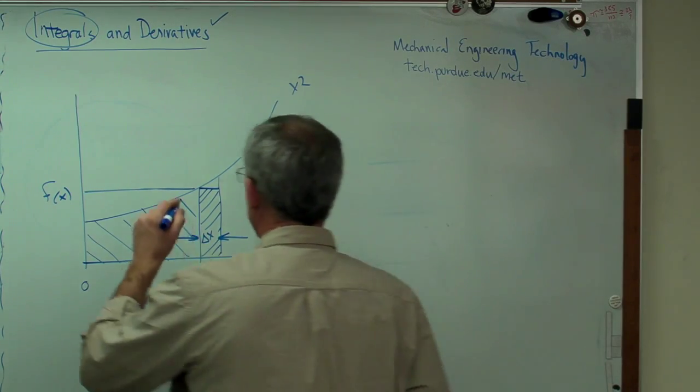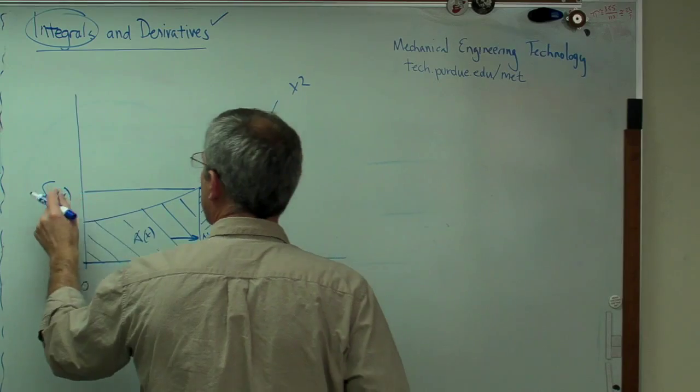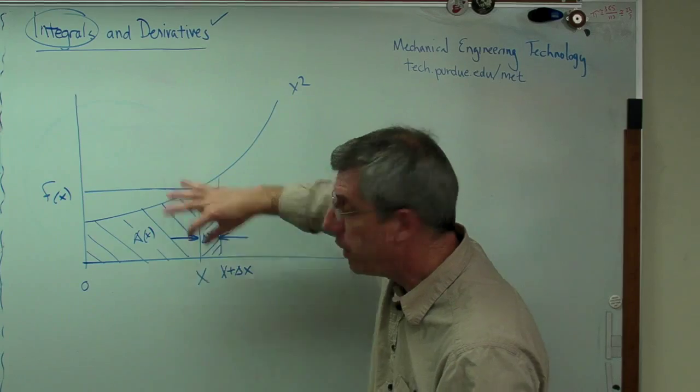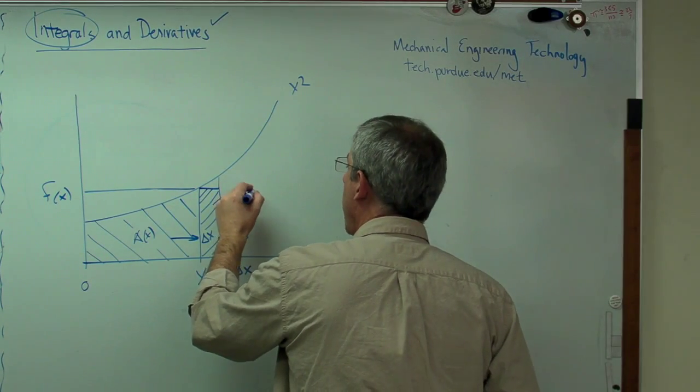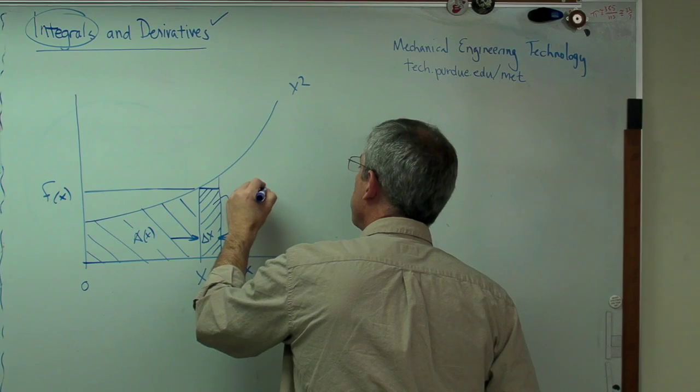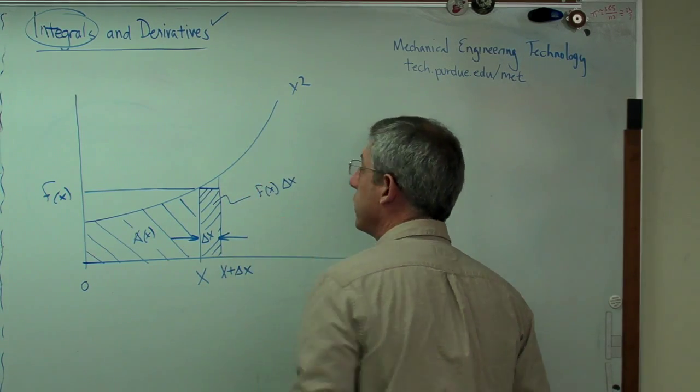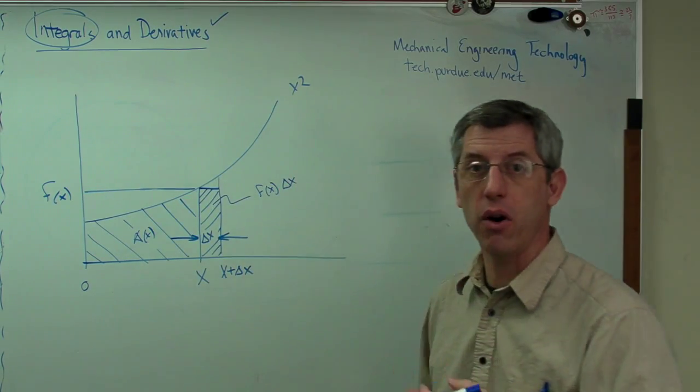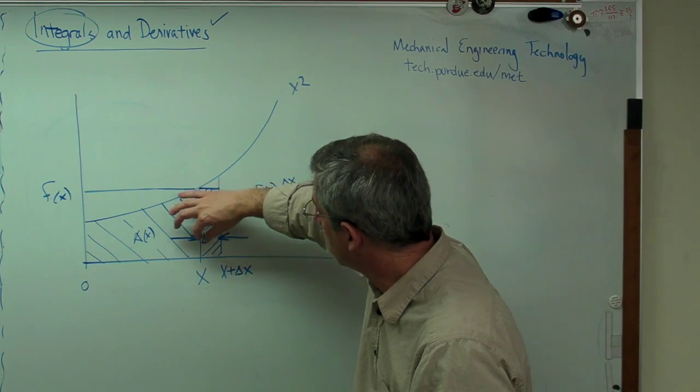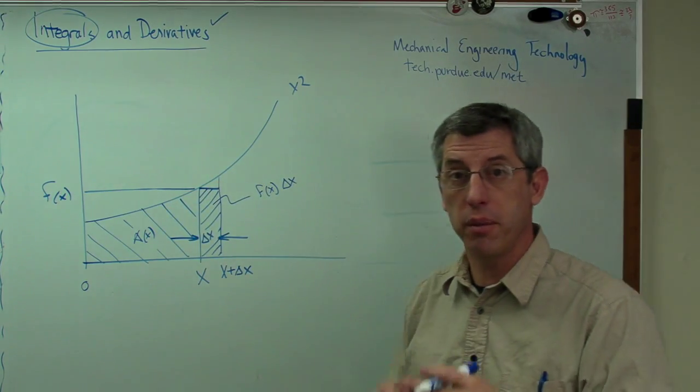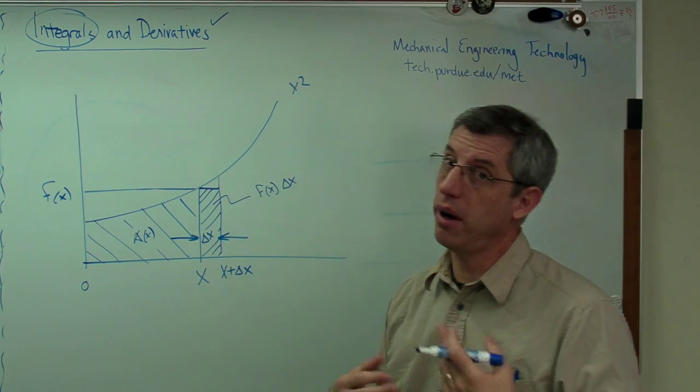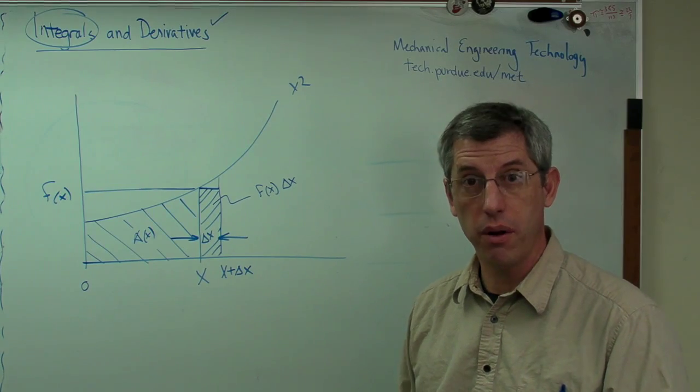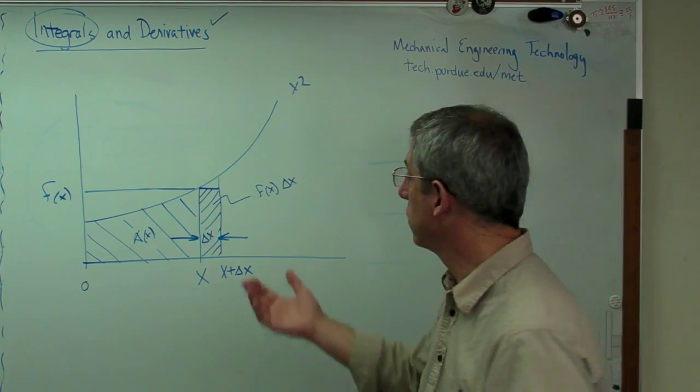Well, that area right there is a box, right? It's a rectangle. If I know the height of the rectangle and the width of it, I can find the area. So the area of that is f of x times delta x. Now I'm missing this little part up here. That's an error. But as delta x gets smaller and smaller and smaller, that little triangle there, the difference between the true area and my approximate area also gets smaller and smaller and smaller. It gets arbitrarily small. Small enough that I don't care anymore. That's where I'm headed here.